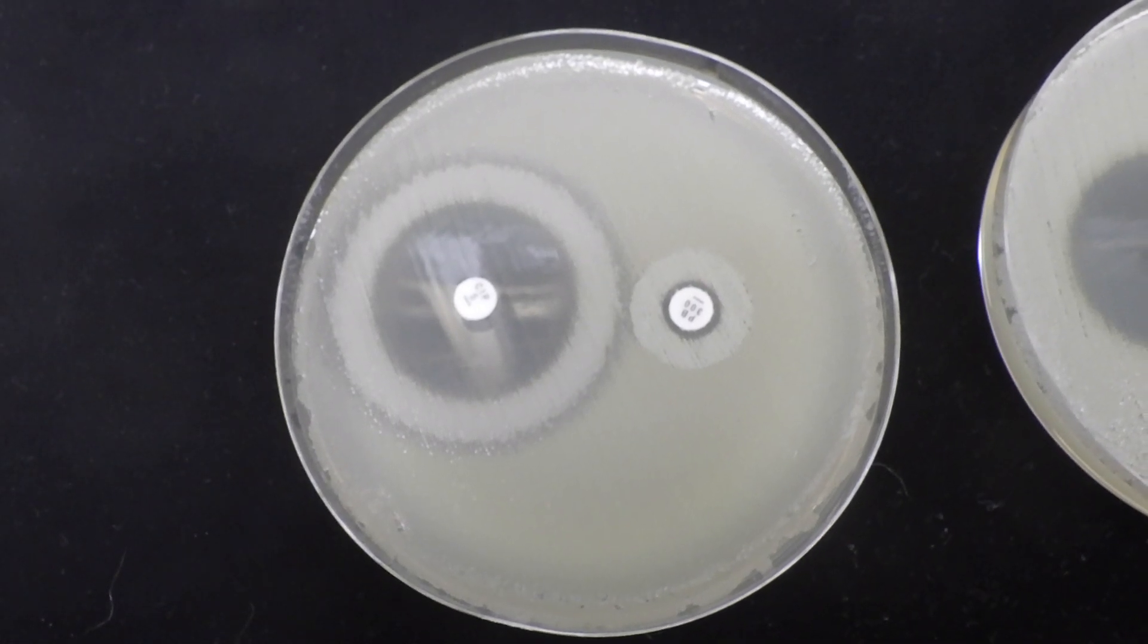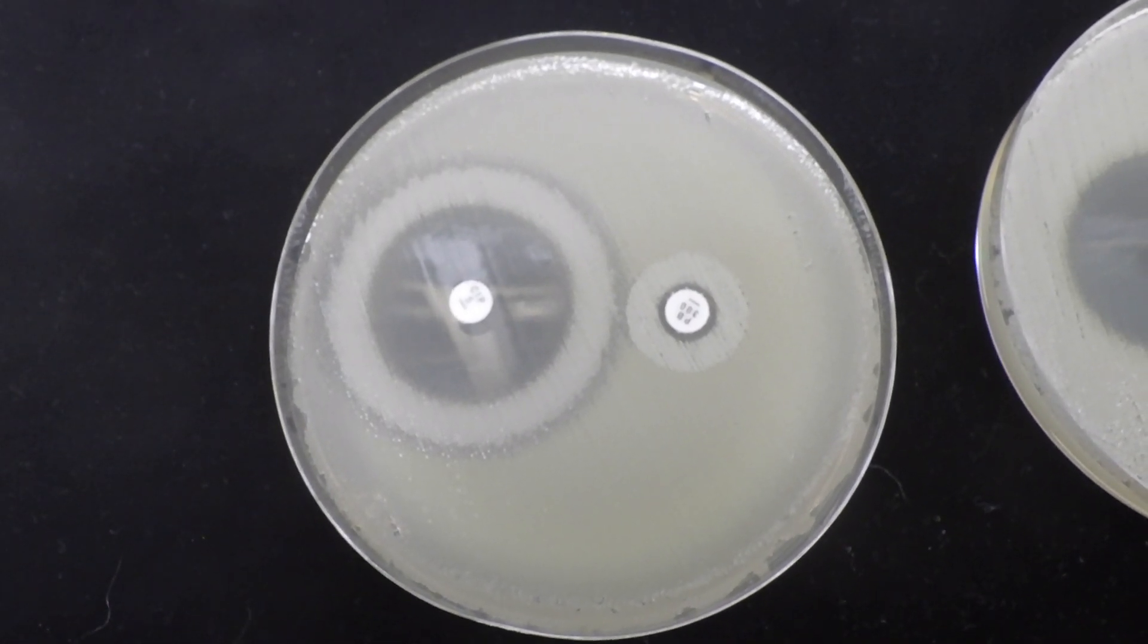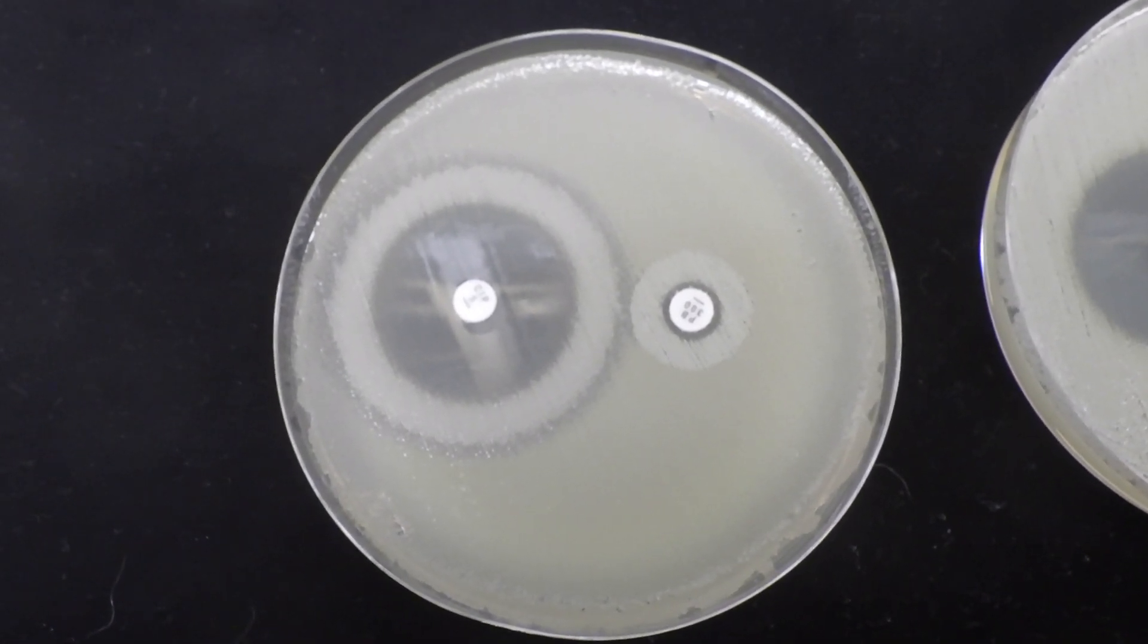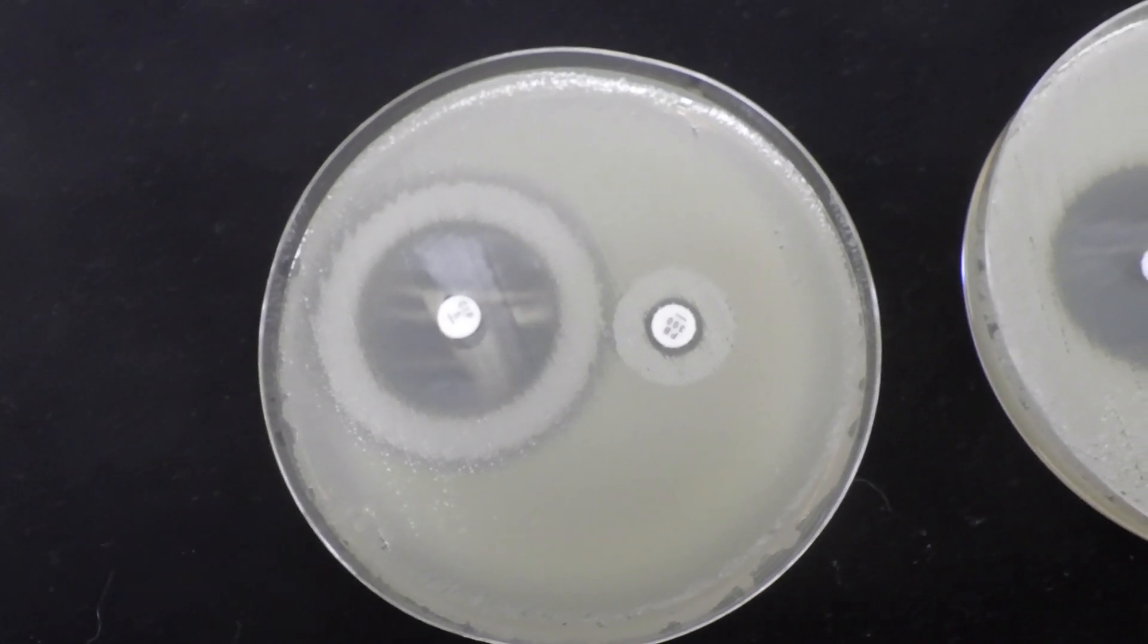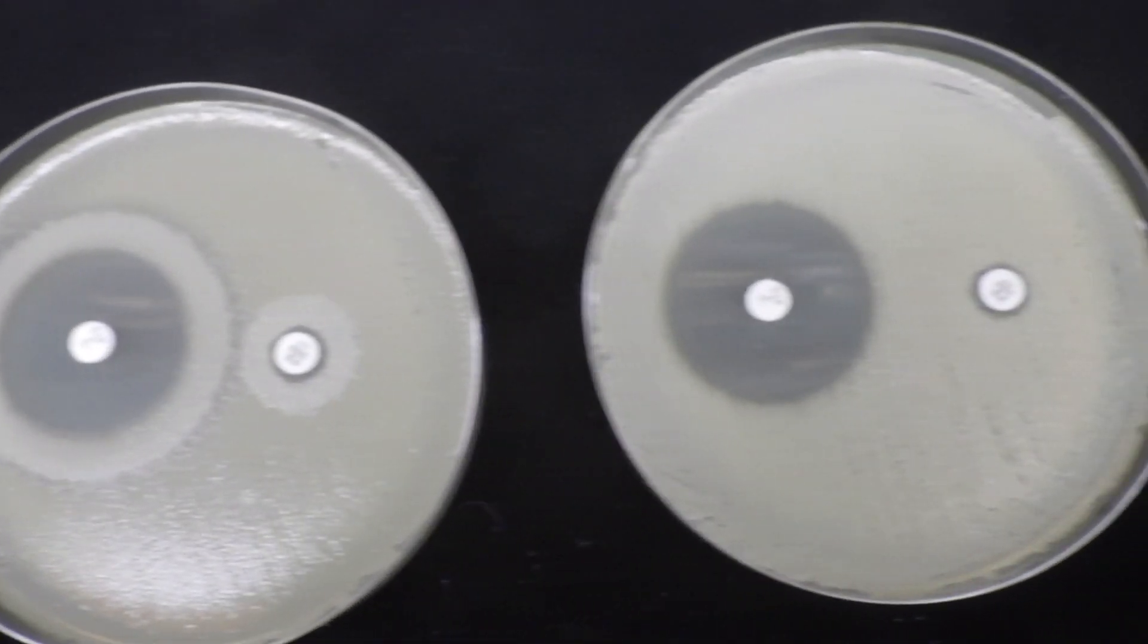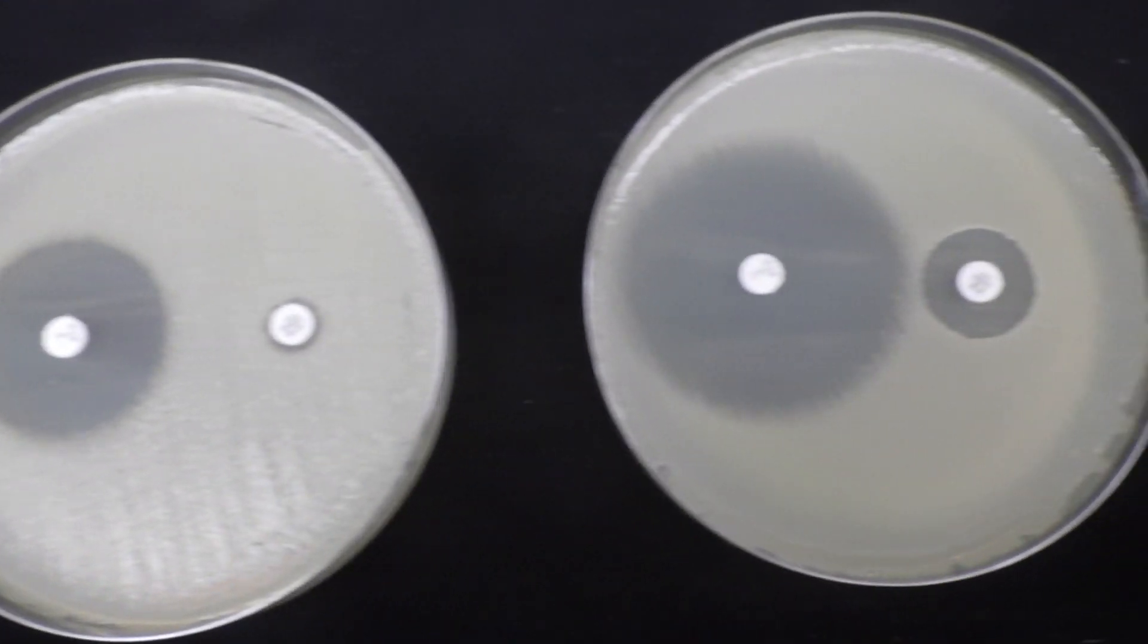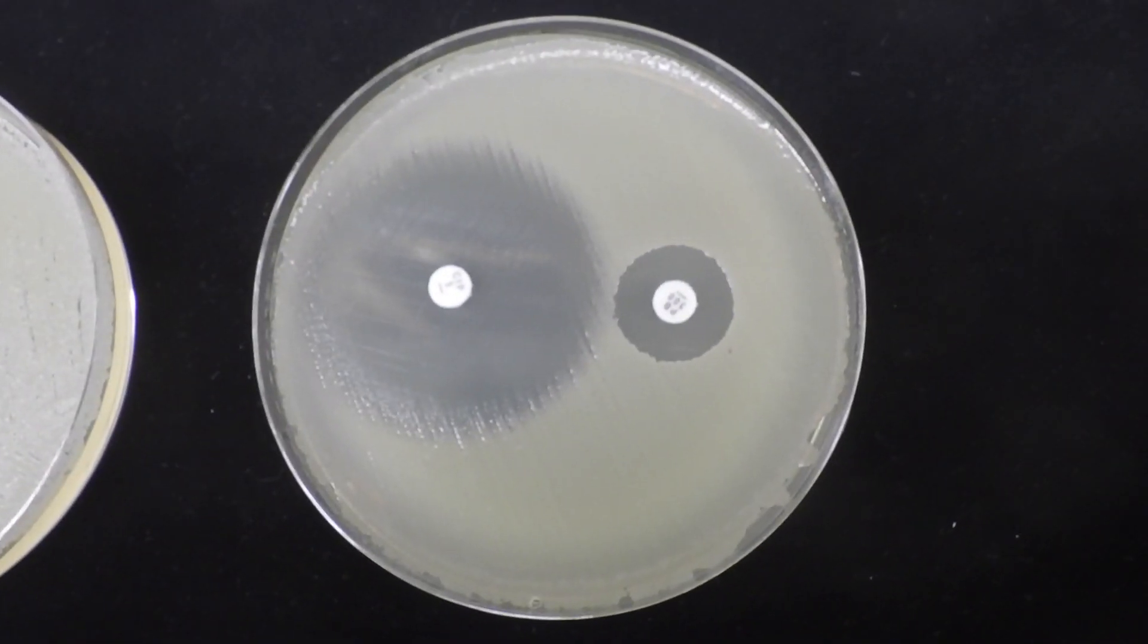On the left what we have is a disc diffusion test done with a mixed culture of both E. coli and Staph aureus. In the center we have only Staph aureus and then on the right we have a pure culture of E. coli.